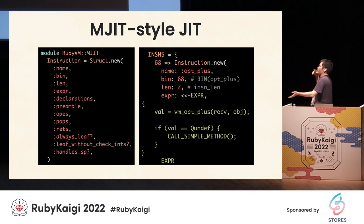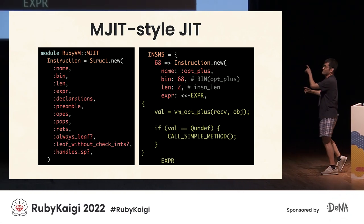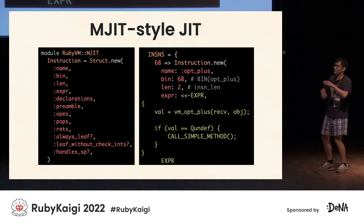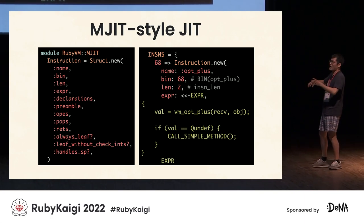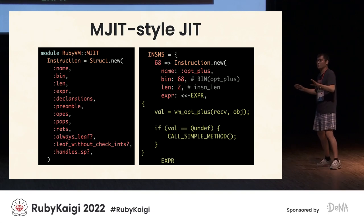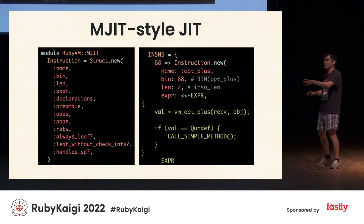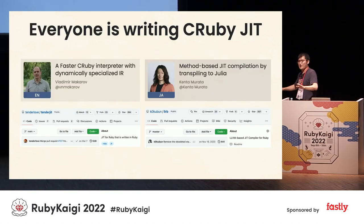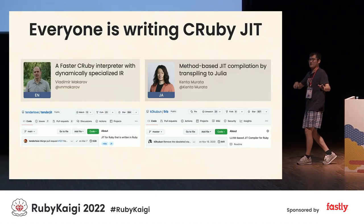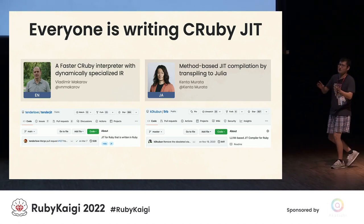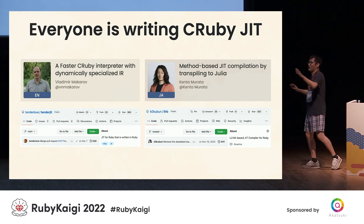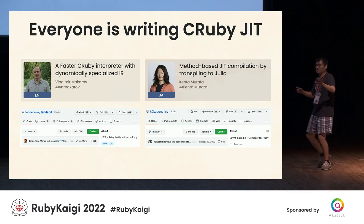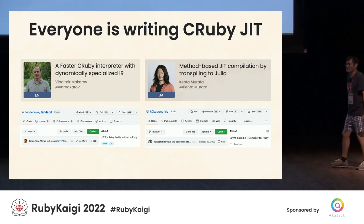Just one more piece of information: because MJIT translates instruction sequences to machine code, we have a library with the actual C code for virtual machine implementation. So if you want to use LLVM to parse the C code and do optimization with it, you can do that with this constant. And by the way, everyone is now writing JIT — there are two other non-master-merged JIT compiler talks at this conference. Aaron Patterson wrote a JIT compiler in Ruby, and I in the past wrote an LLVM-based JIT compiler. So you might be the only person not writing a JIT compiler.